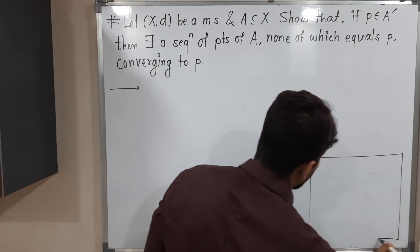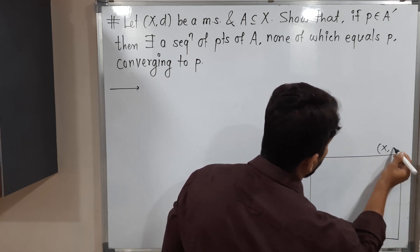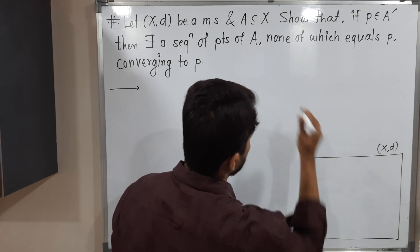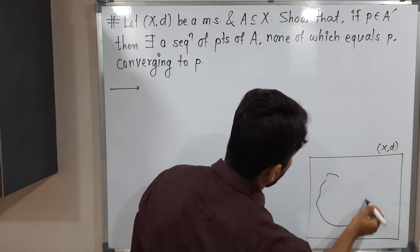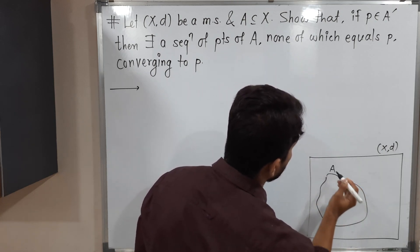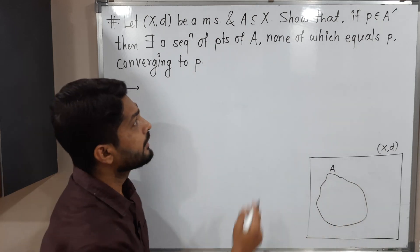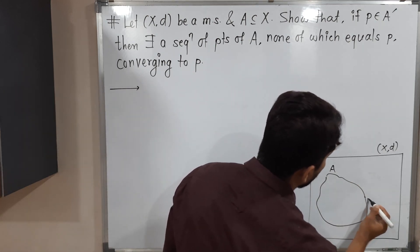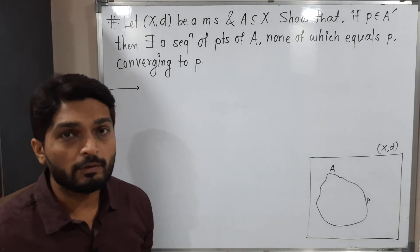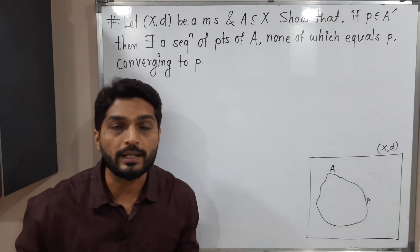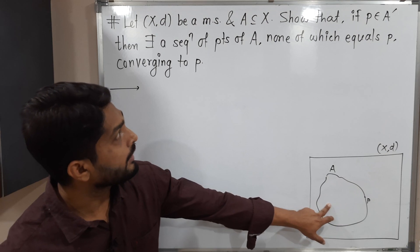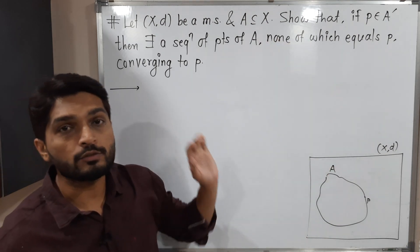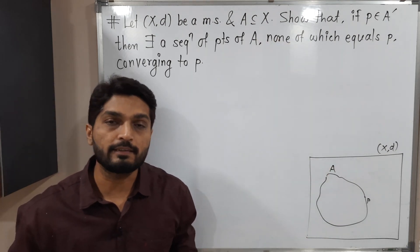Suppose this is a metric space we have. They have given one set A which is a subset of X. If P belongs to A dash, that means if P is a limit point of A, then we have to prove there exists a sequence of points of A, none of which equals P, and it is converging to P. This is what we have to prove.